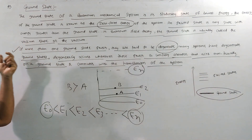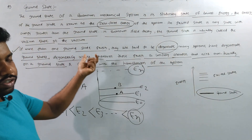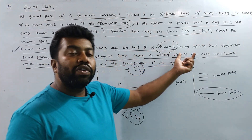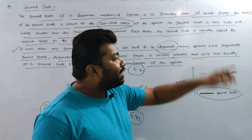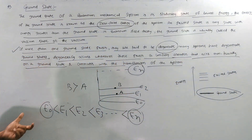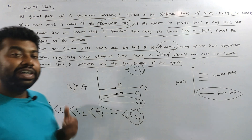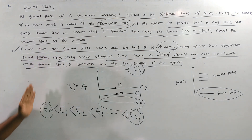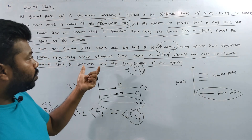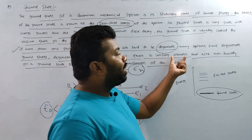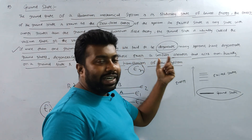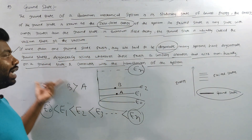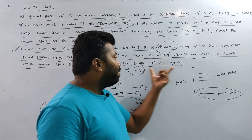If more than one ground state exists, then you have degeneracy. Many systems have degenerate ground states. If you have the highest energy system, you have degeneracy. That means there is more than one energy state, or it has more than one ground state. Degeneracy occurs whenever there exists a unitary operator that acts non-trivially on a ground state and commutes with the Hamiltonian system.